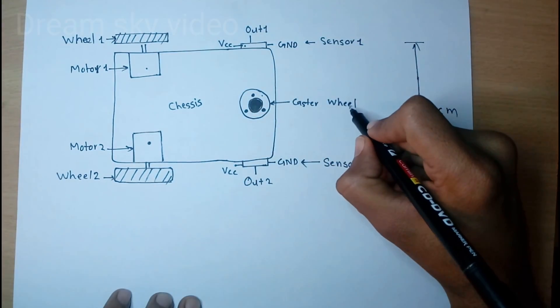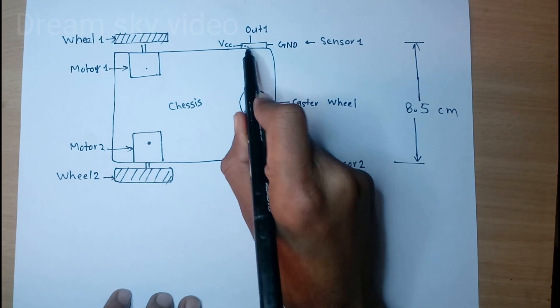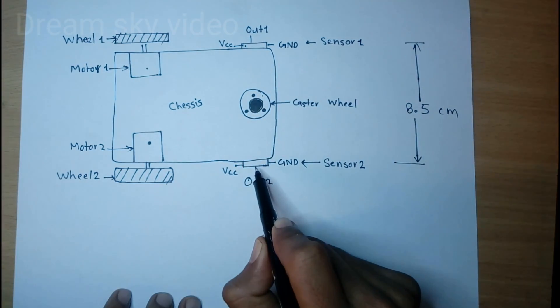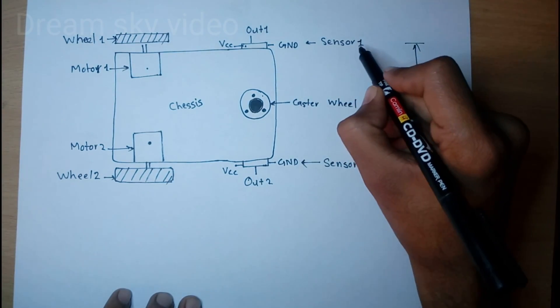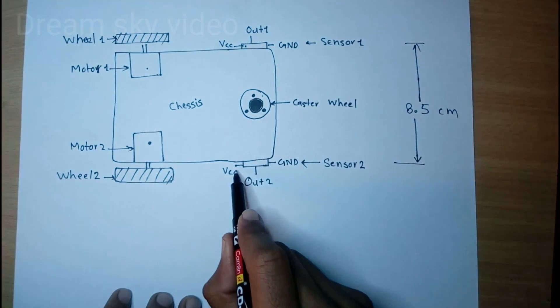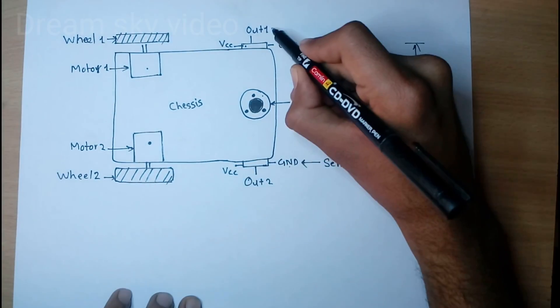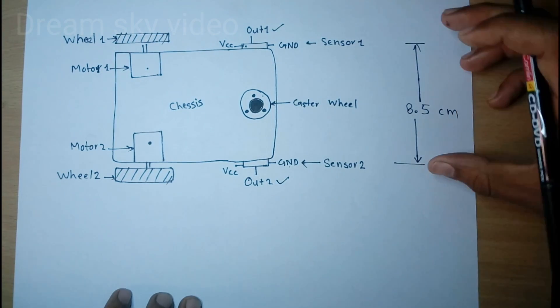These two sensors are connected to both side of this chassis. In sensor this is VCC and this is ground. This is also VCC and ground. This is output one and output two.